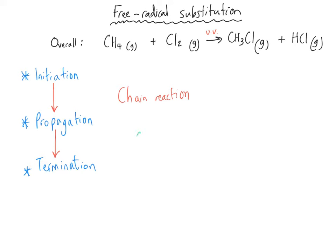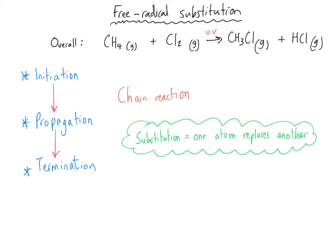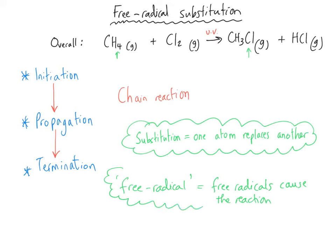It's called a substitution reaction because one atom is replacing another. In this example, a chlorine is coming in to take the place of one of the four hydrogens — there are only three hydrogen atoms at the end. It's called free radical substitution because it is free radicals that cause this reaction to happen. Together, free radical substitution tells the chemist that one atom is replacing another and that free radicals are the cause.